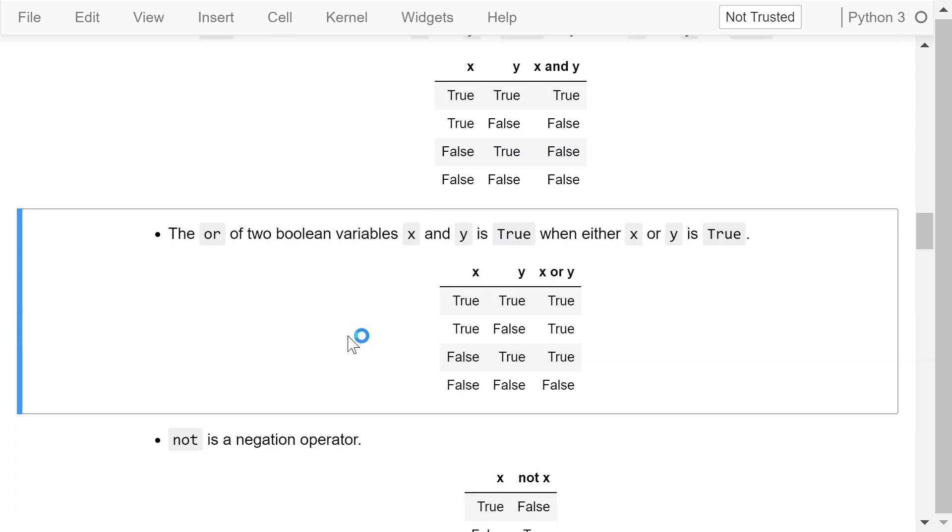The OR operation of two boolean variables, x and y, is true when either x or y is true. It resembles the addition operation. Still, think of true as 1 and false as 0. Any value that is larger than 1 will be kept at 1. 1 plus 1 equals 2, which will be kept at 1. 1 plus 0 equals 1. 0 plus 1 equals 1. 0 plus 0 equals 0.